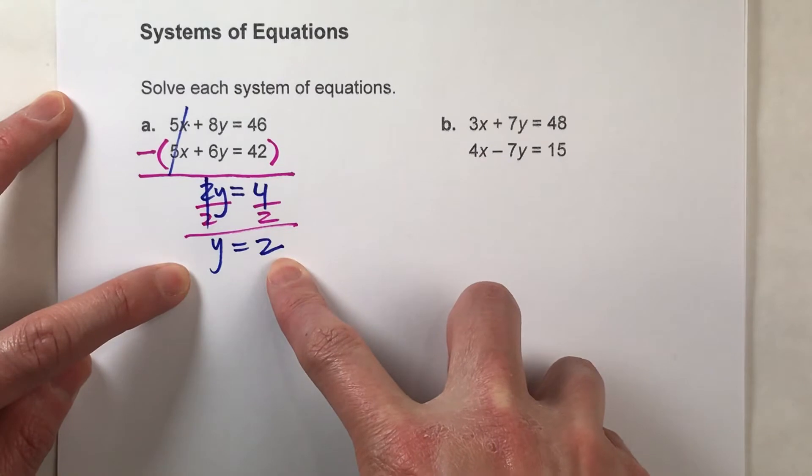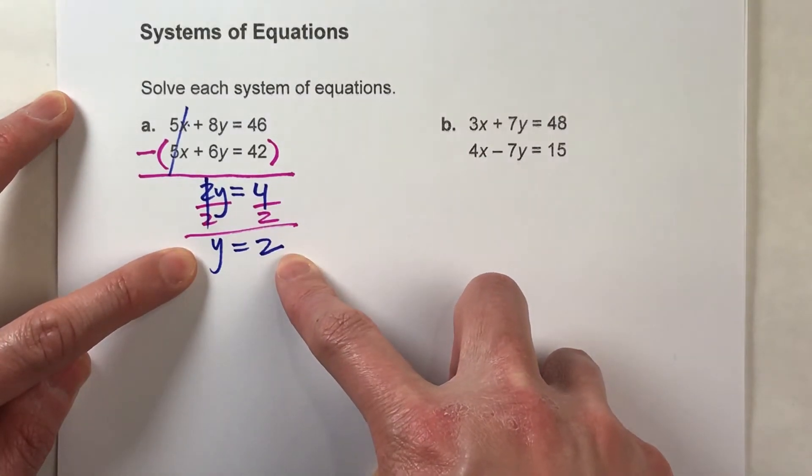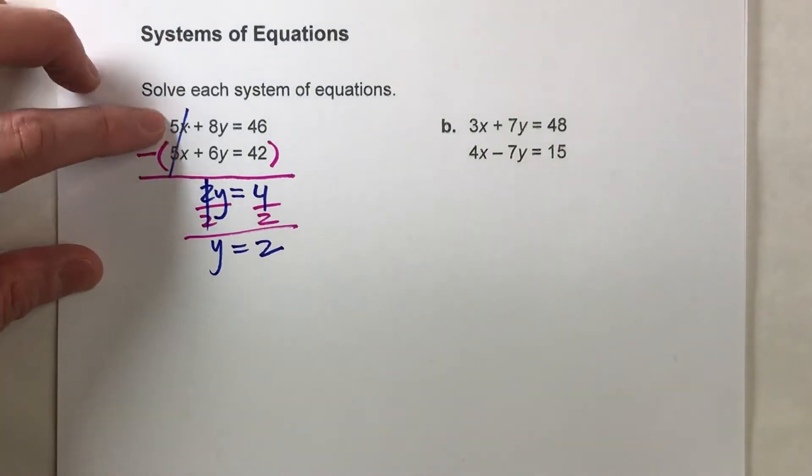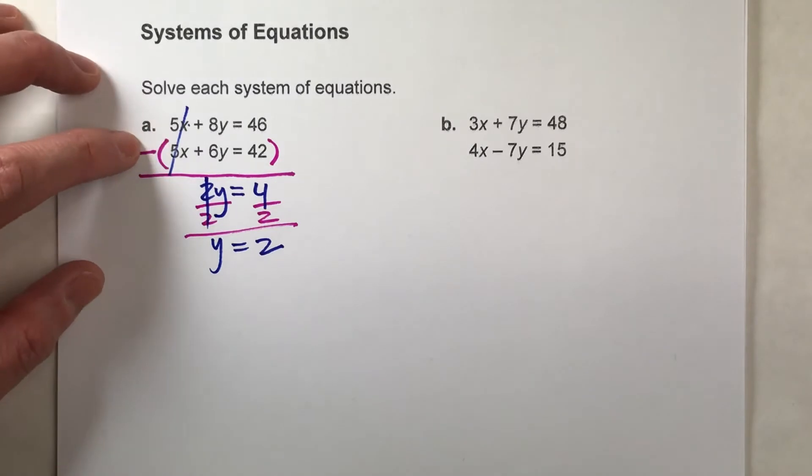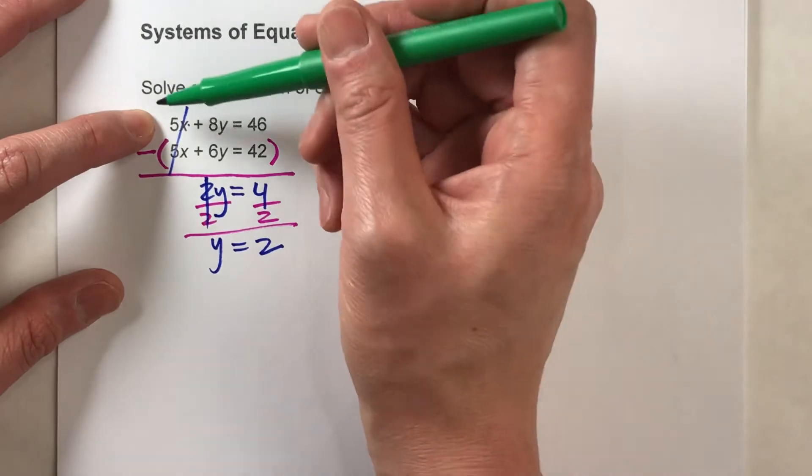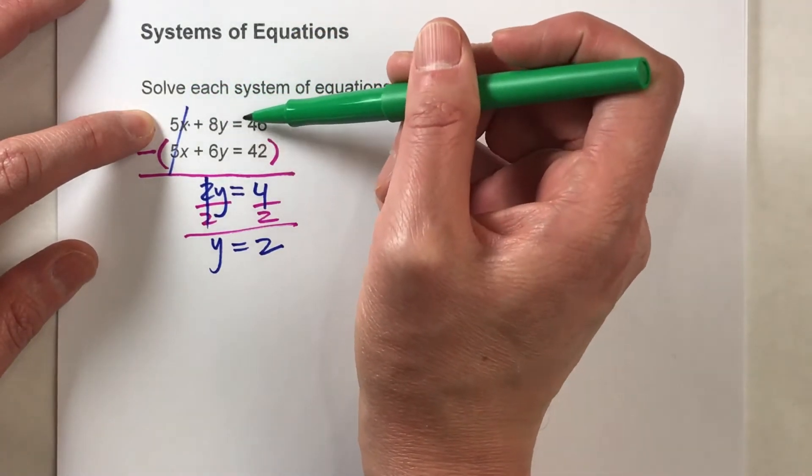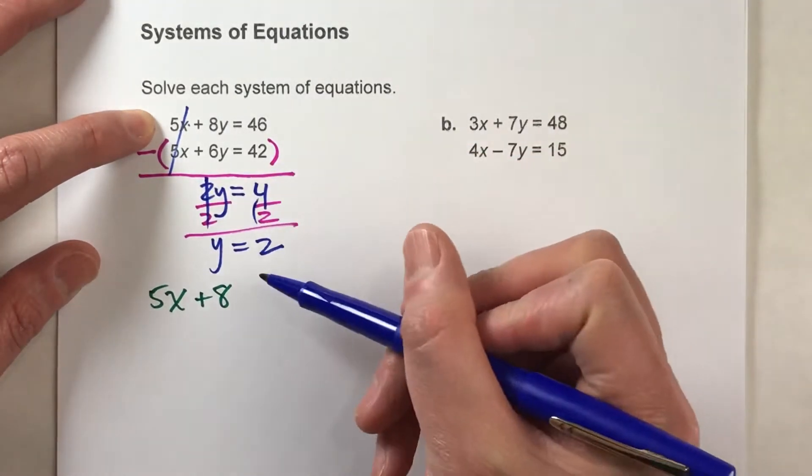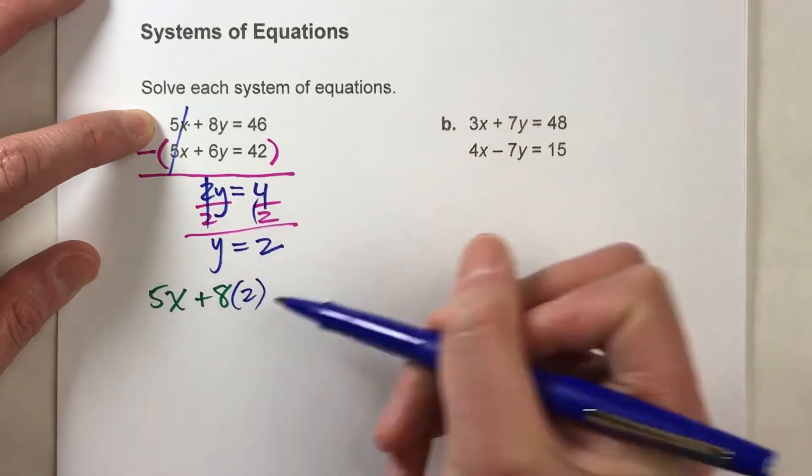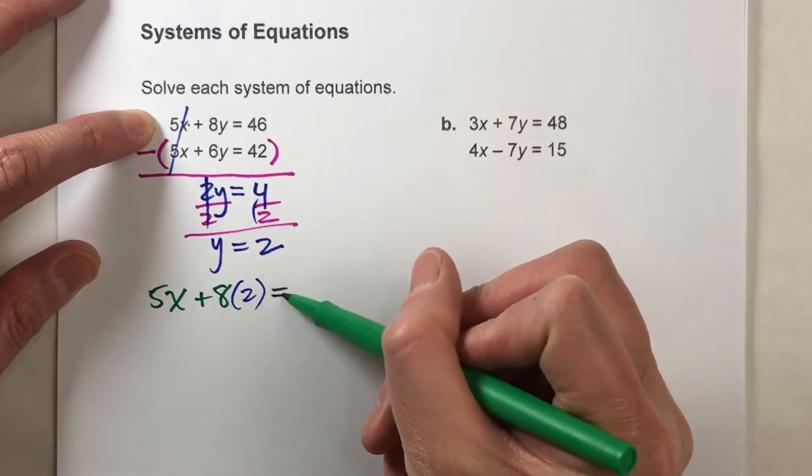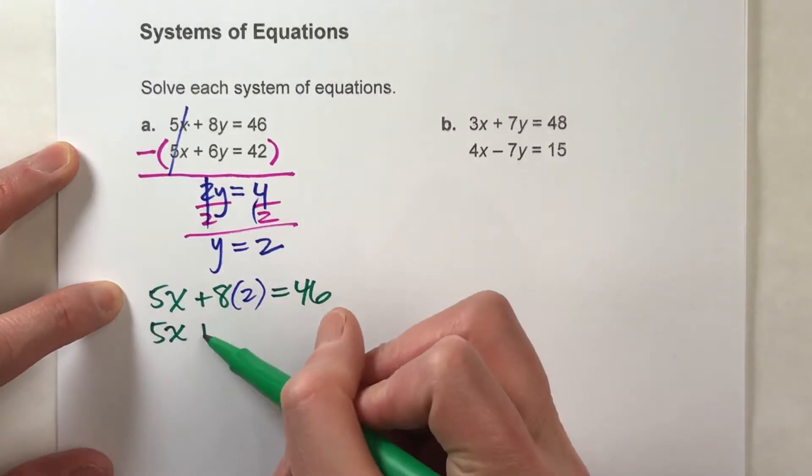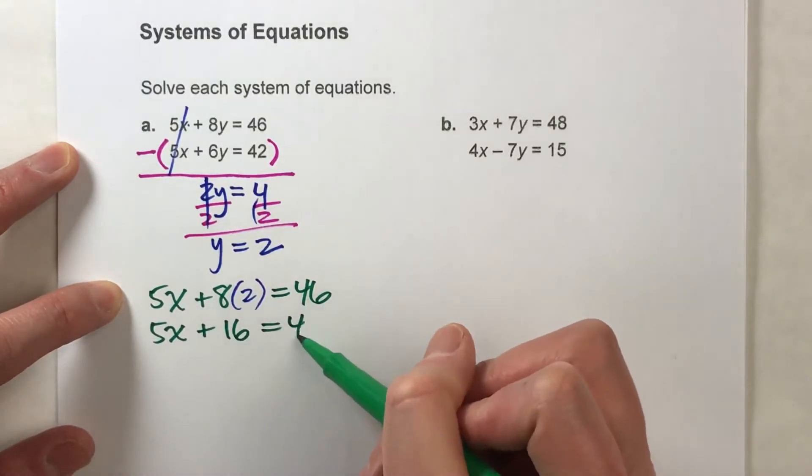Now to figure out what x is, I'm going to take my value of y and put it back into the original equation. And in this case, it doesn't matter which one you pick, because you should get the same answer no matter what. So pick whichever one's easiest for you. I'm just going to pick the top one. So instead of 5x plus 8 times y, I'm going to do 5x plus 8 times the value we just found for y, which is 2. And that should equal 46.